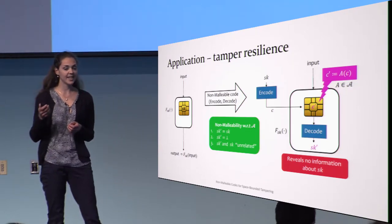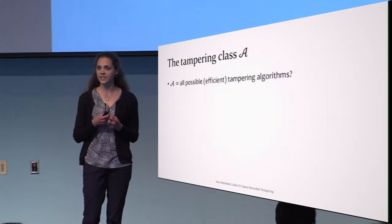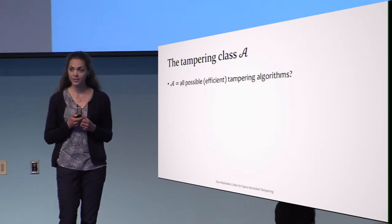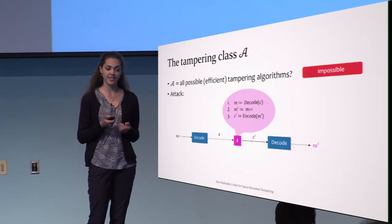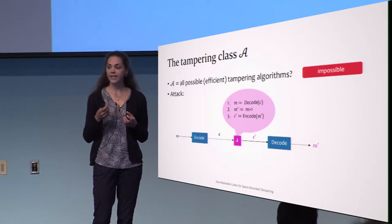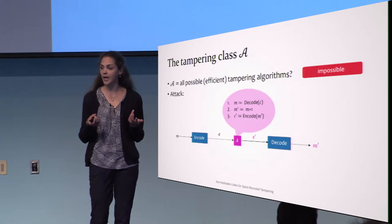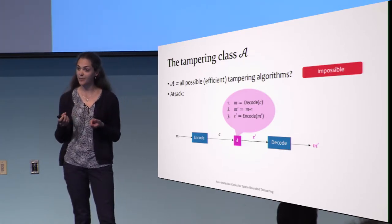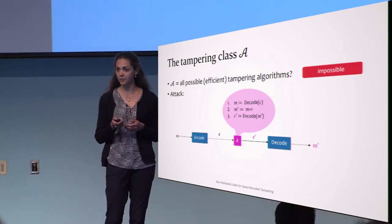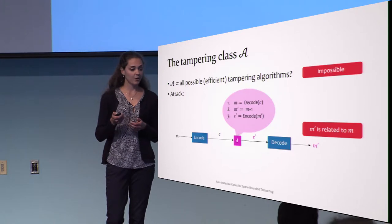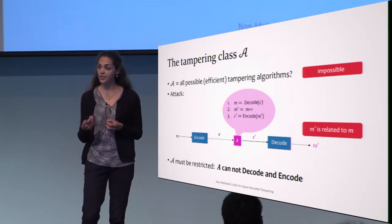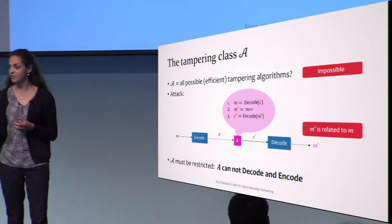The big question is: against which tampering algorithms can we protect? Can we protect against all possible or all efficient algorithms? Unfortunately not. Here is the attack: suppose the tampering function can decode to learn the original message M, then change M to some related M' (for example, flip one bit), and then encode M' to obtain C'. This tampering algorithm manages to produce a codeword C' that decodes to a related message M'. The conclusion is we must restrict the tampering algorithms — we cannot allow all efficient tampering algorithms, and in particular we can never allow the tampering function to run both decode and encode.